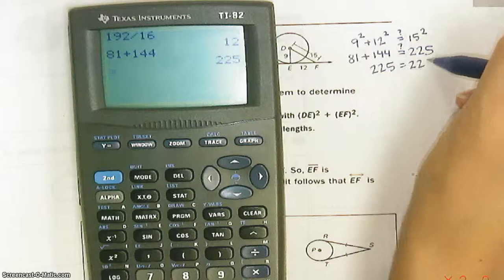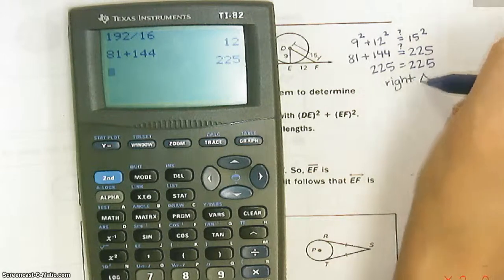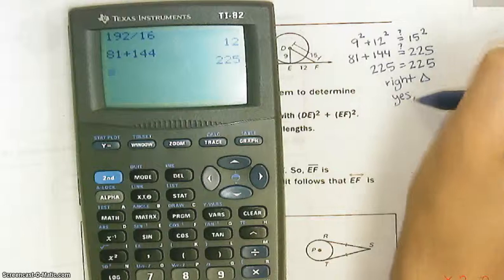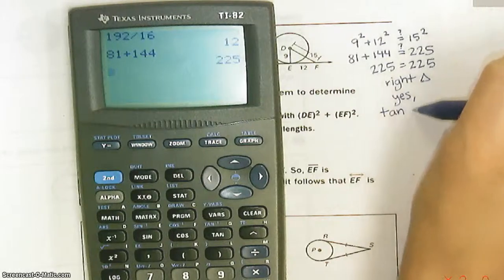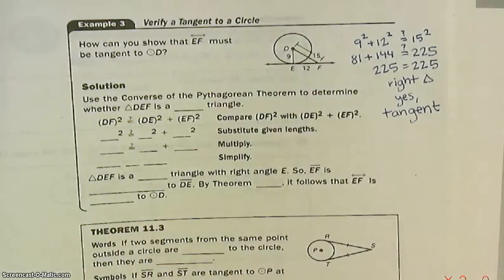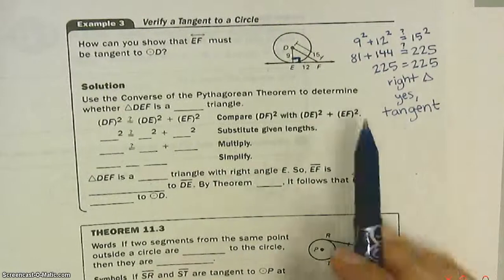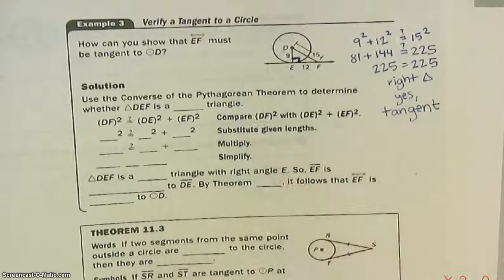So, this is a right triangle, which means, yes, it's tangent. Has to make a right angle. Put your right angle in there. We now know it's a right angle. If this were not equal, then it would be no, and it's not a tangent.